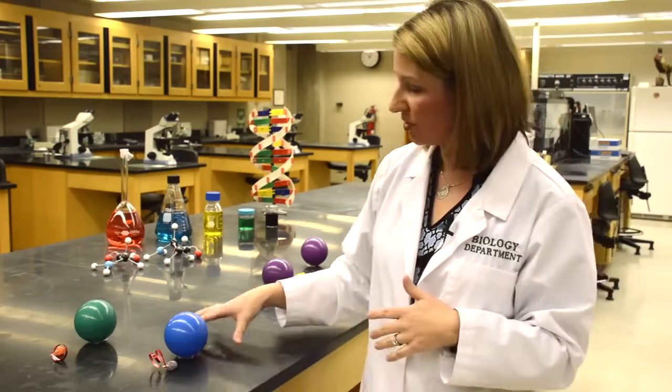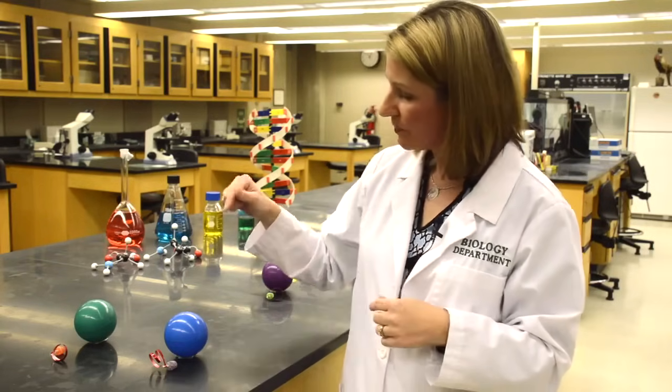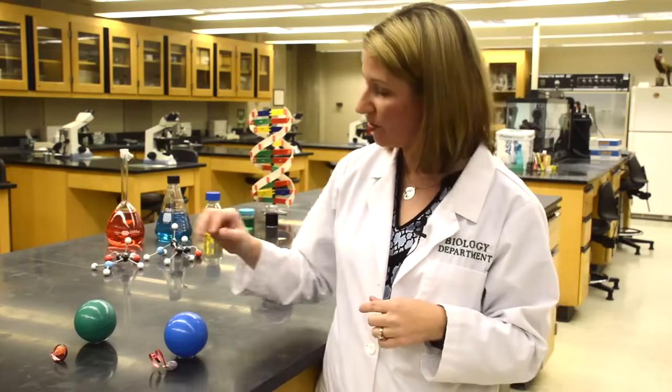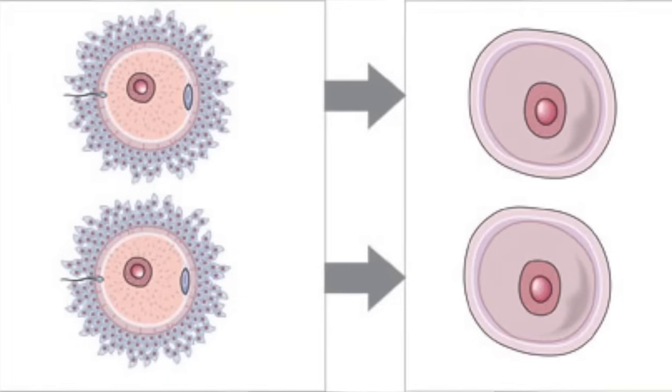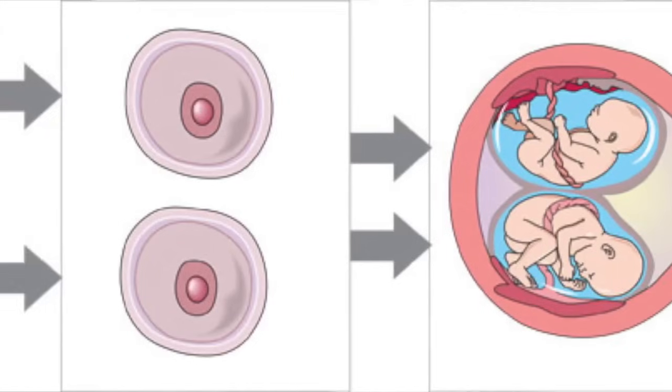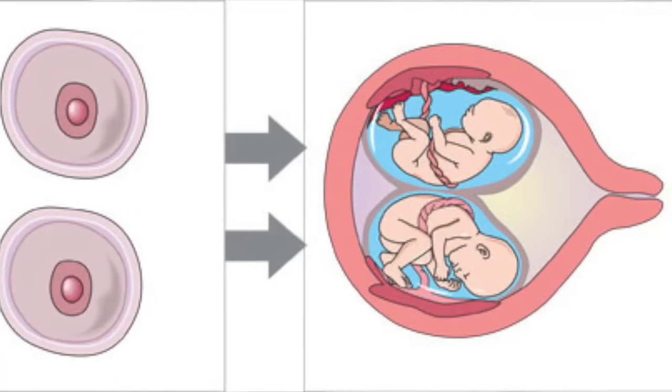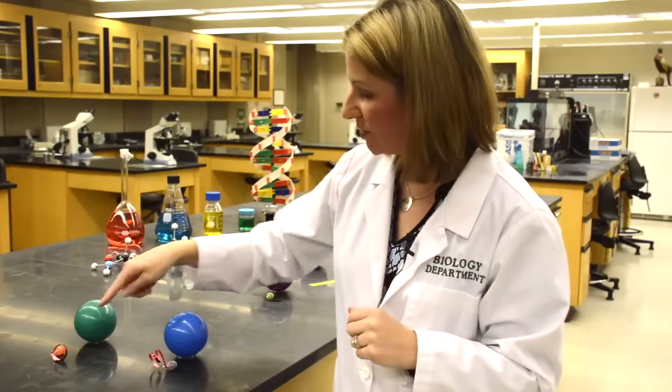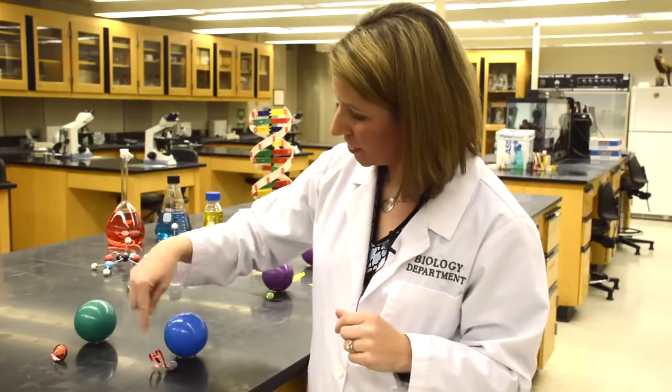But when we look at fraternal twins, fraternal twins are dizygotic, so two zygotes or two eggs are going to be ovulated at the same time from the mother, and that is unusual. Usually it's only one at a time. So in this case, we have two eggs from a hyperovulating mother, and then we have two sperm from the father. So you can see that they're different colors because they're different genetically.